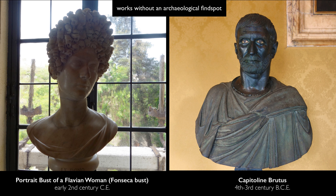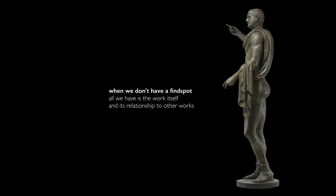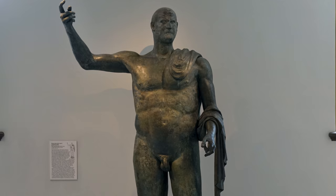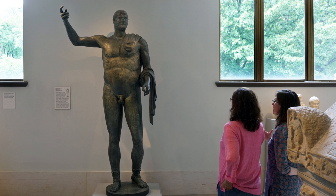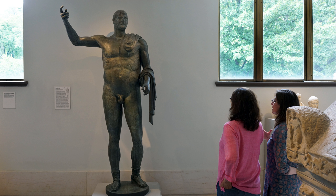We so often study objects that don't have a secure findspot. When we interpret objects based only on how they look, their style, and their relationship to other objects, we can only reinforce things we already have an understanding about — we don't ever learn anything new. If we knew this was set up in a prestigious place, say the Roman Forum, it would force us to rethink our assumptions about the classical ideal at various moments in history. But without that secure information, this can only reinforce our prejudices, not help us get past them.